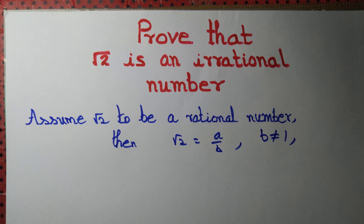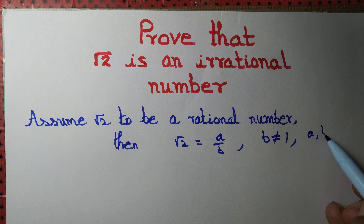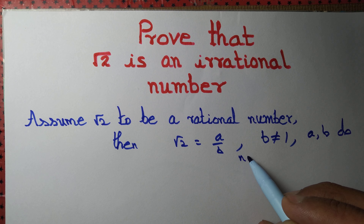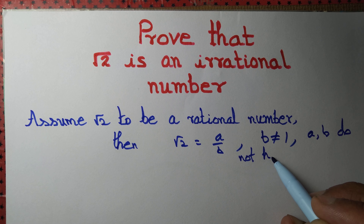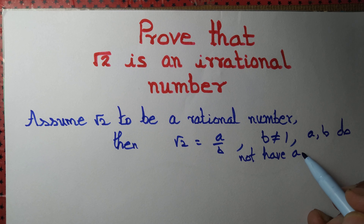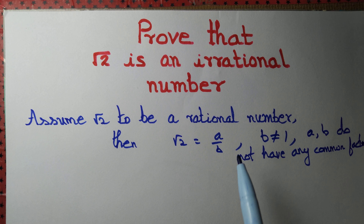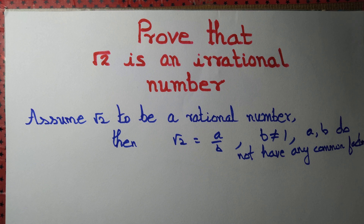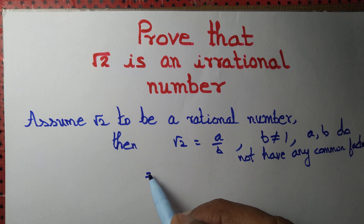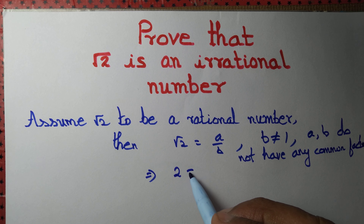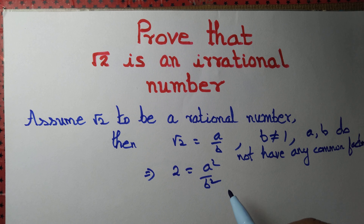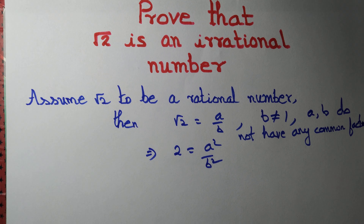Further, we assume that if a and b had any common factor, we cancel it out — so a and b do not have any common factor. With √2 = a/b and a, b having no common factor, let's square both sides to obtain 2 = a²/b².